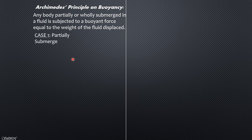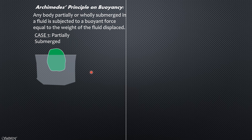Case 1: partially submerged body. We have here a floating body that is in equilibrium, subjected to the following forces. The center of gravity of the body is where the weight acts. The center of buoyancy is defined as the centroid of the submerged portion of the body — the submerged volume. The weight acts through the center of gravity, and the buoyant force acts through the center of buoyancy. Because this is in equilibrium, weight is equal to buoyant force.